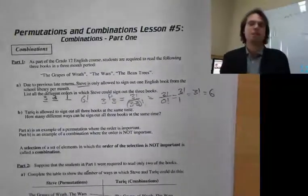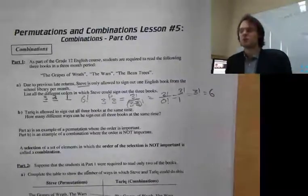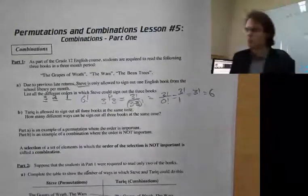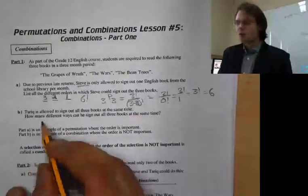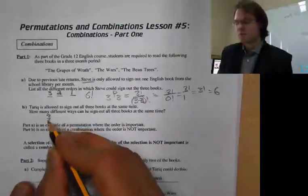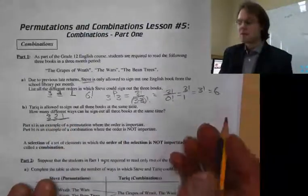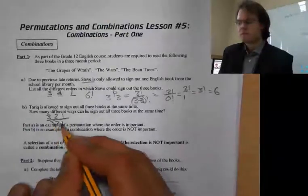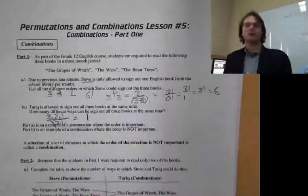Now Tariq is an excellent student, always bringing his books in on time, so how many different ways can he sign out three books? Because he brings his books in on time, he could sign them all out at once. So pretty much we have a combination of three — three, two, one — but he could take them all out at once, so that combination really doesn't matter.